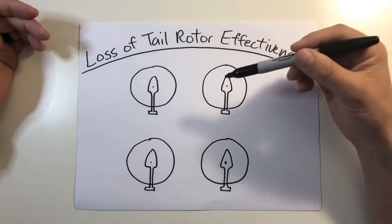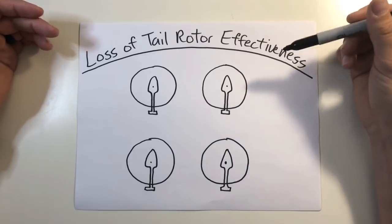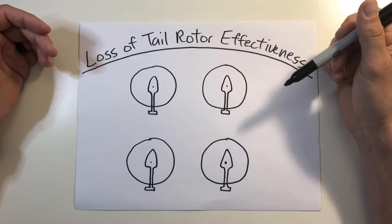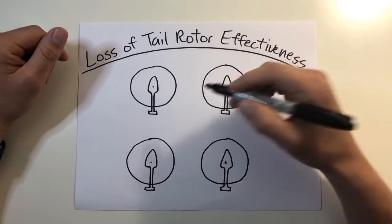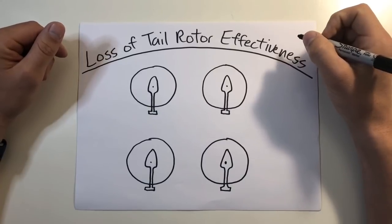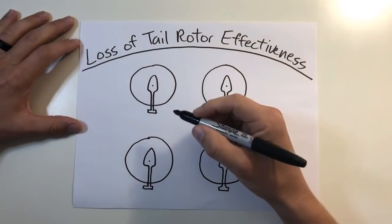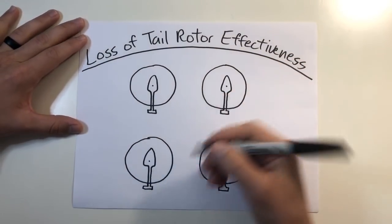Loss of tail rotor effectiveness is a wind issue, which can occur when operating at speeds of less than effective translational lift. Flight and wind tunnel testing has identified a few relative wind regions that can cause loss of tail rotor effectiveness, and the first is generally from the 4 o'clock to the 8 o'clock position and is known as weathercock stability.